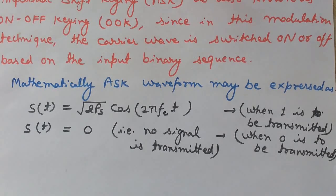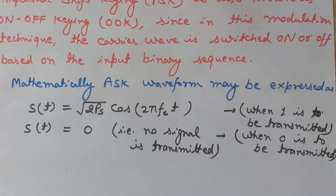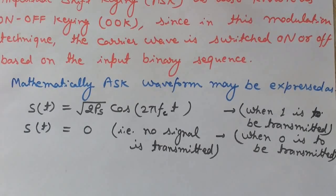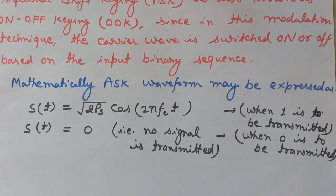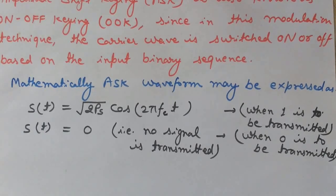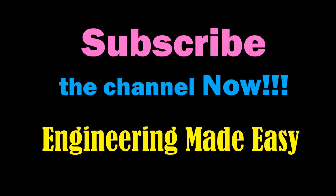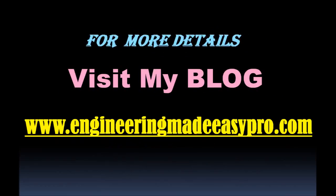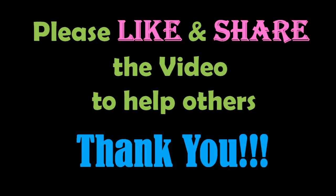This was all about amplitude shift keying. We discussed its definition, concept, mathematical representation, power spectral density, and the block diagram for generation of ASK. In the next videos we will cover demodulation of ASK, frequency shift keying, and phase shift keying. Keep watching Engineering Made Easy — please subscribe, like, and share the video. You can also visit the blog for more detailed information. See you soon!